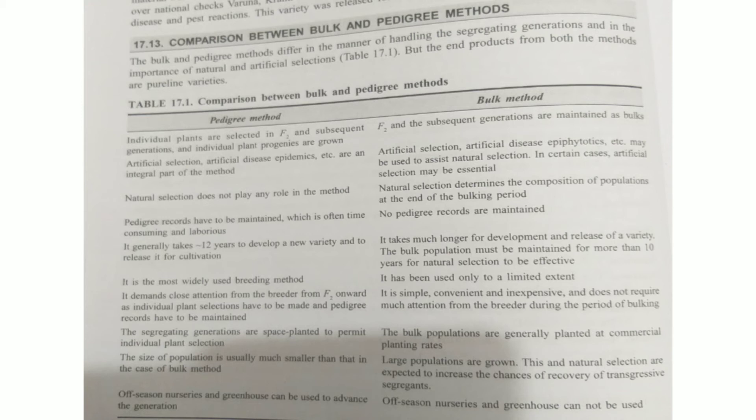Pedigree records have to be maintained in the pedigree method, which is often time consuming and laborious. We need to select individual plants, including selection after disease screening, and keep the pedigree record for each plant.